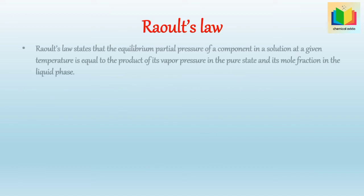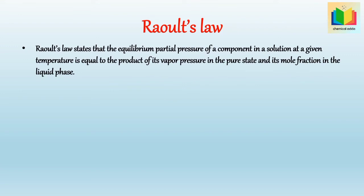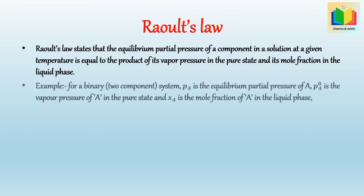Define Raoult's law. Raoult's law states that the equilibrium partial pressure of a component in a solution at a given temperature is equal to the product of its vapor pressure in the pure state and its mole fraction in the liquid phase. For a binary system: pA = pA⁰ · xA and pB = pB⁰ · xB, where pA is the equilibrium partial pressure of A, pA⁰ is the vapor pressure of A in pure state, and xA is the mole fraction of A in the liquid phase.